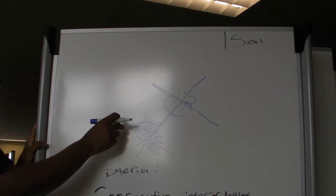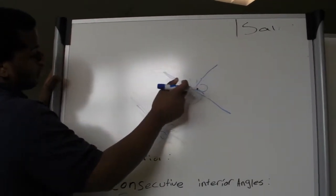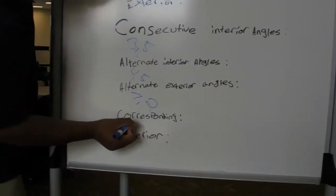Corresponding angles are when one's on the inside and one's on the outside. For example, three and eight are corresponding. That makes sense.